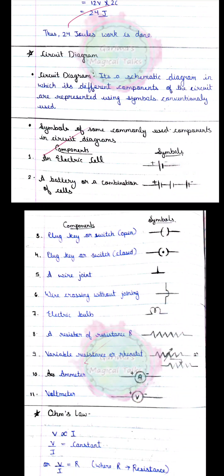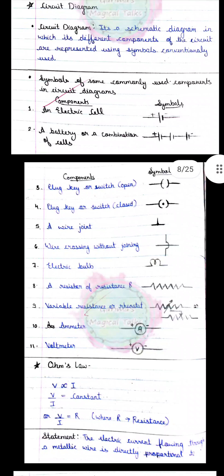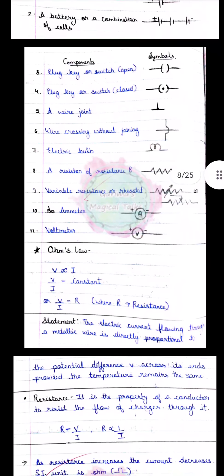The components used to complete the circuit include the cell, battery, and key. Open key वो होती है जिसमें current flow नहीं होता, और closed key वो होती है जिसमें current flow करता है।